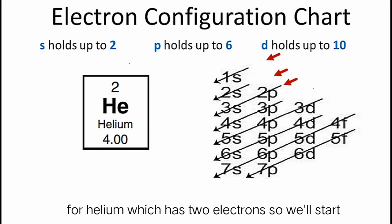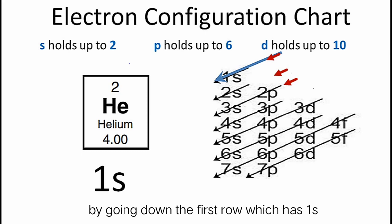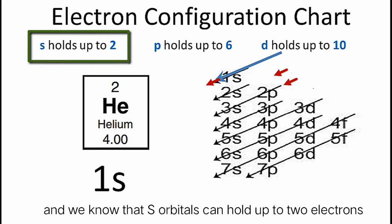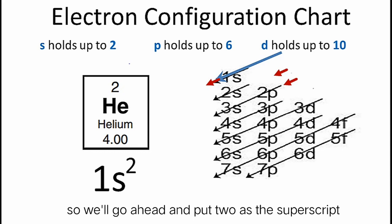We'll use the chart on the right to find the configuration for helium, which has two electrons. So we'll start by going down the first row, which has 1s as the orbital there. We know that s orbitals can hold up to two electrons, so we'll go ahead and put 2 as the superscript to show that there are two electrons in this 1s² orbital. Now we've used all the electrons we have for helium, so we're actually done with this electron configuration.